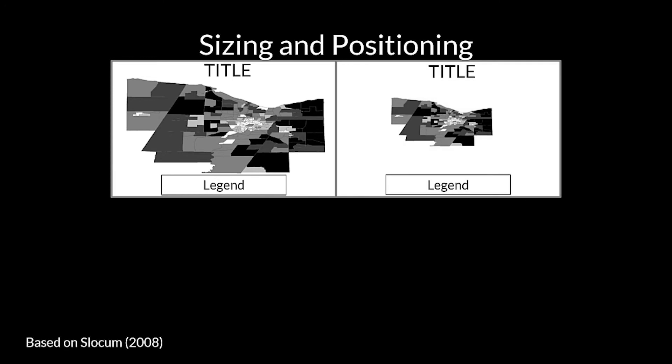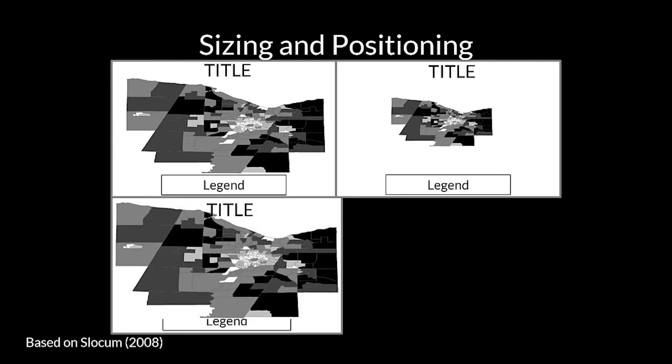This image shows a map where the positioning of elements is appropriate, but the sizing of the mapped area is insufficiently small, as can be seen by the large amount of white space around the mapped area. This next image shows an example where, again, the positioning of the elements is appropriate, but the sizing of the mapped area is insufficiently too large, as can be seen by the mapped area overprinting on the title and legend, and the mapped area touching the neat line on the right side of the frame.